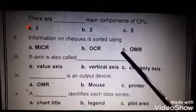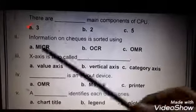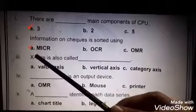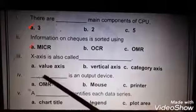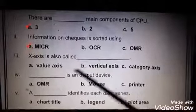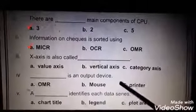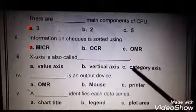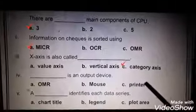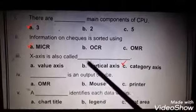Number 3: X-axis is also called dash. A: value axis, B: vertical axis, C: category axis. Right answer is C, category axis. X-axis jo hota hai us ko category axis Excel mein kehte hain.